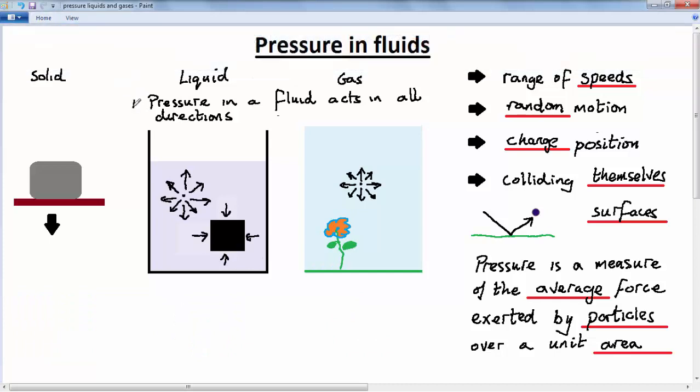So we've got one, the pressure in the fluid acts in all directions. Two, the pressure produced by a fluid on a surface is always at right angles to that surface.